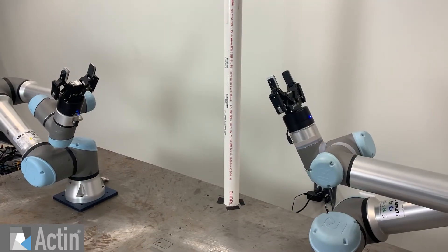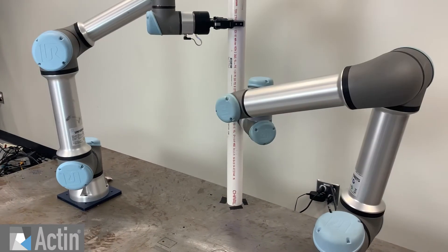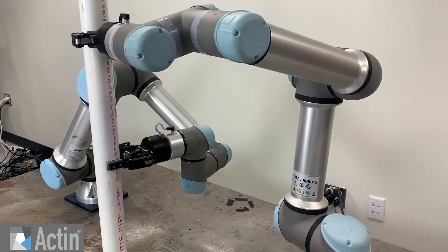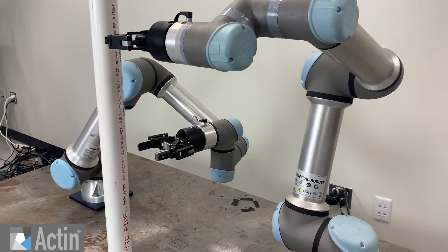With Actin, you can define constraints on the robot to coordinate the arms in many different ways, enabling co-lifting, part handoffs, coordinated process applications, and more.